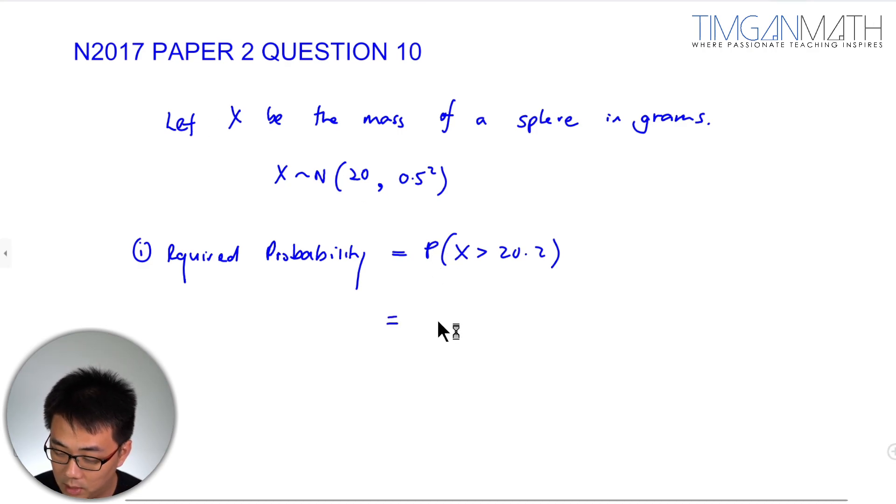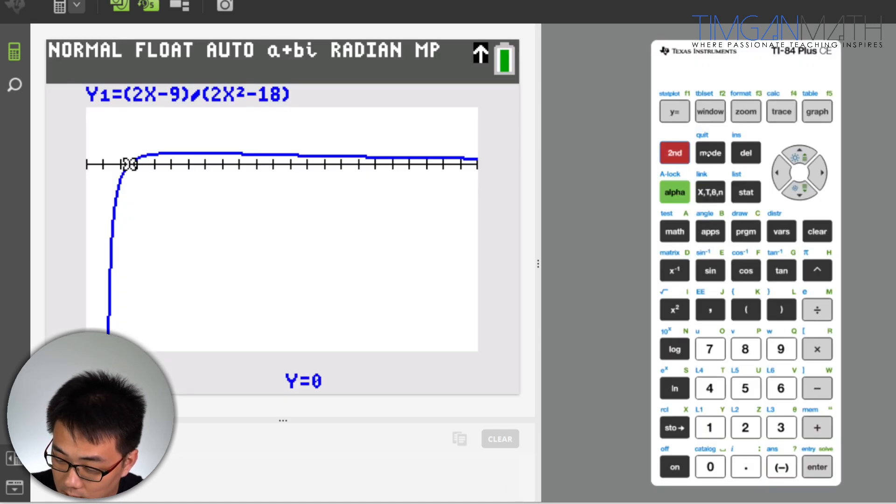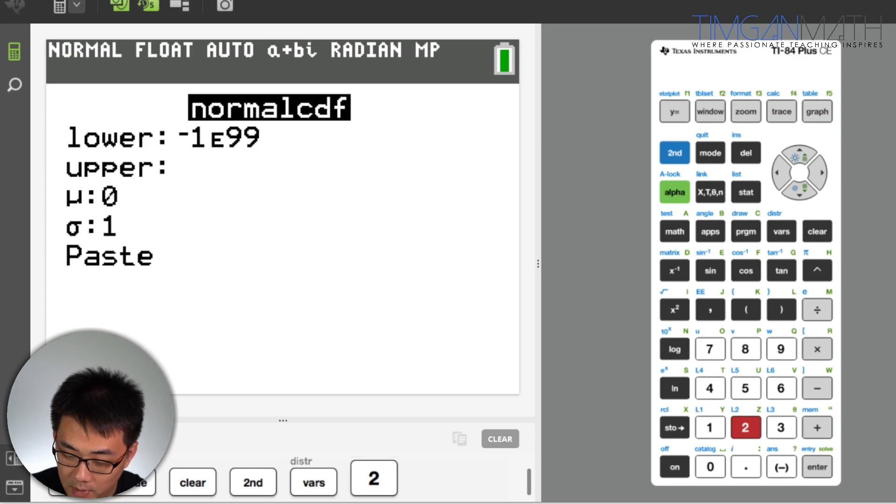What we do is just key in calculator. We just put 20.2 for the lower bound and the upper bound, we just put 10 to the power of 99. So in this case here, I'm just going to go to distribution and normalcdf there. The lower boundary is 20.2 and upper bound is 10 to the power of 99.